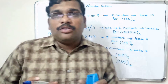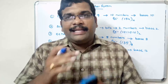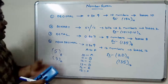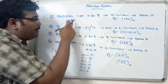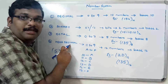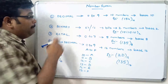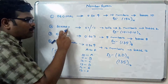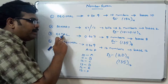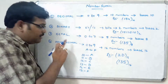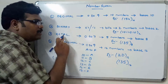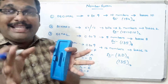Let us stop here. In the next session we will go with the conversions — how to convert decimal to binary, decimal to octal, decimal to hexadecimal, binary to decimal, binary to octal, binary to hexadecimal, octal to decimal, octal to binary, octal to hexadecimal, hexadecimal to decimal, hexadecimal to octal, and hexadecimal to binary.